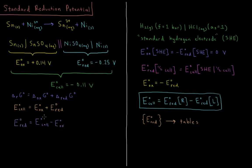From this, we can rearrange the equation to see that the standard EMF of the reduction of our half cell at the cathode is equal to the standard EMF of the cell minus the standard EMF of the oxidation occurring at the anode on the left.